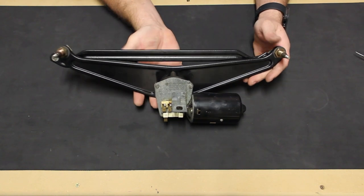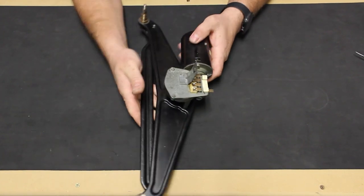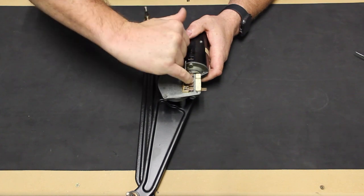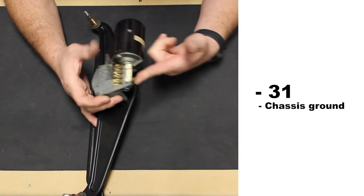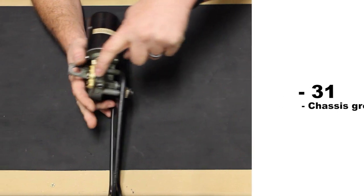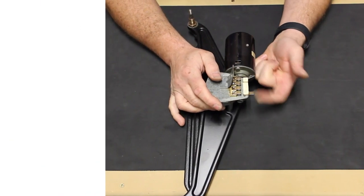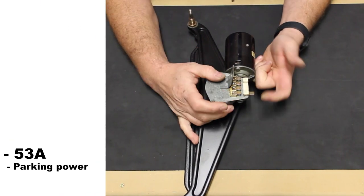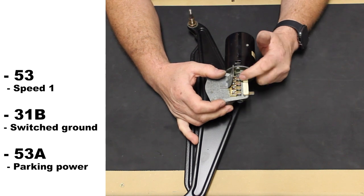Now we'll test our restored wiper motor, which we already know works, but to show you all, looking at the motor and the terminals on it, we've got a 31 terminal on the metal body of the motor and the four terminals above it, which are 53A, 31B, 53, and 53B.